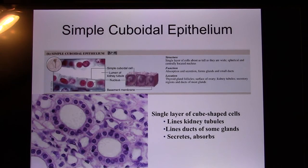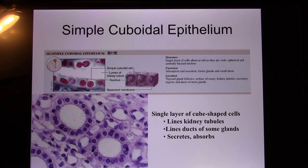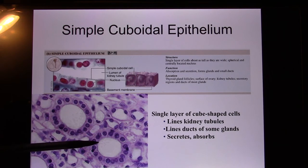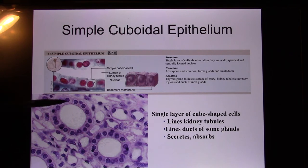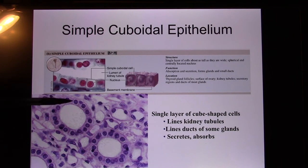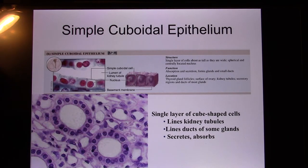Next is simple cuboidal epithelium — one layer, square shape. You find it in the kidney, which has many nephrons. When you cut through a tubule in cross-section, you see a ring of simple cuboidal cells — one layer, square. It is usually found in ducts for secretion and absorption.